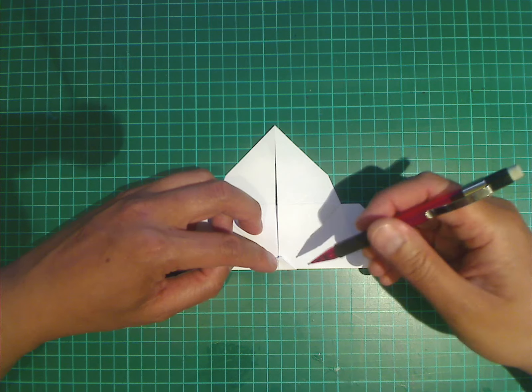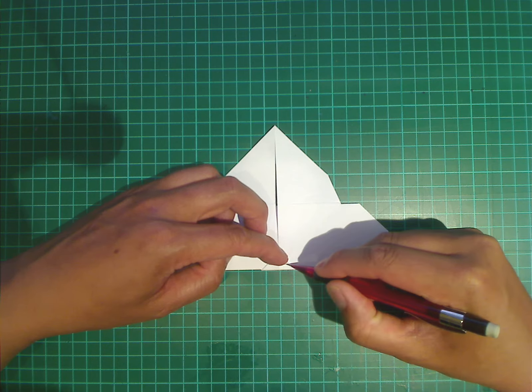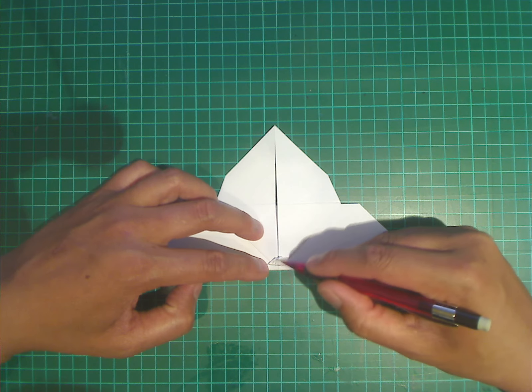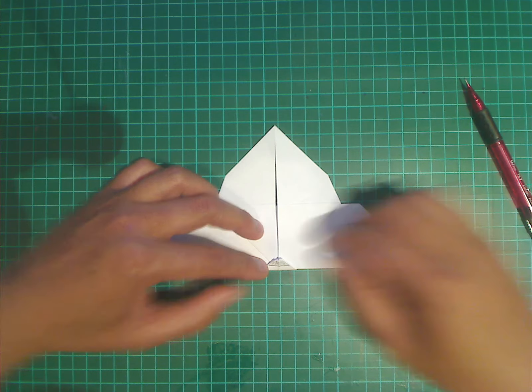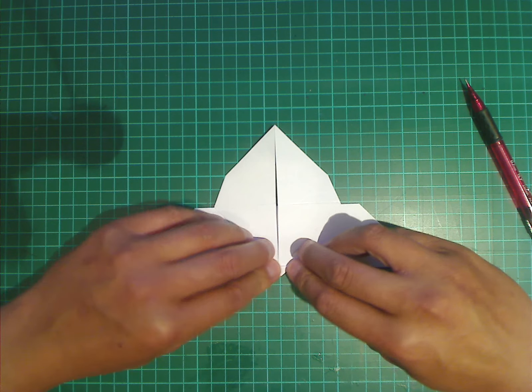So, see this triangle here? Let me draw it. See what I drew in a black line? We're going to fold this small piece of triangle outwards. And this will kind of form the head of the butterfly.